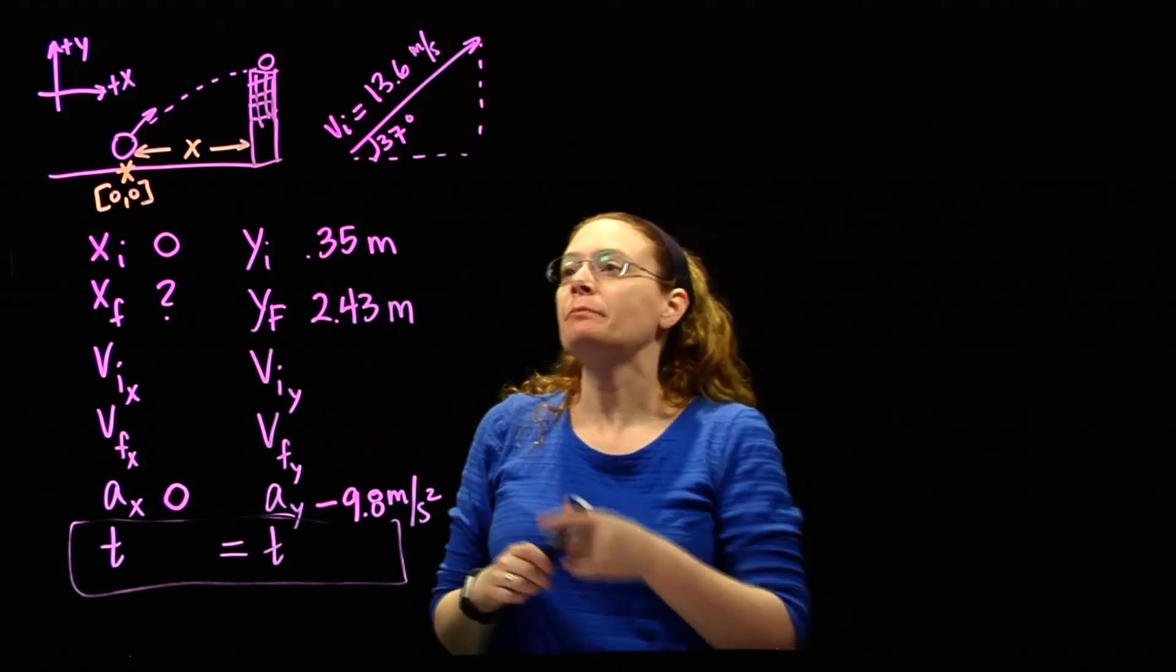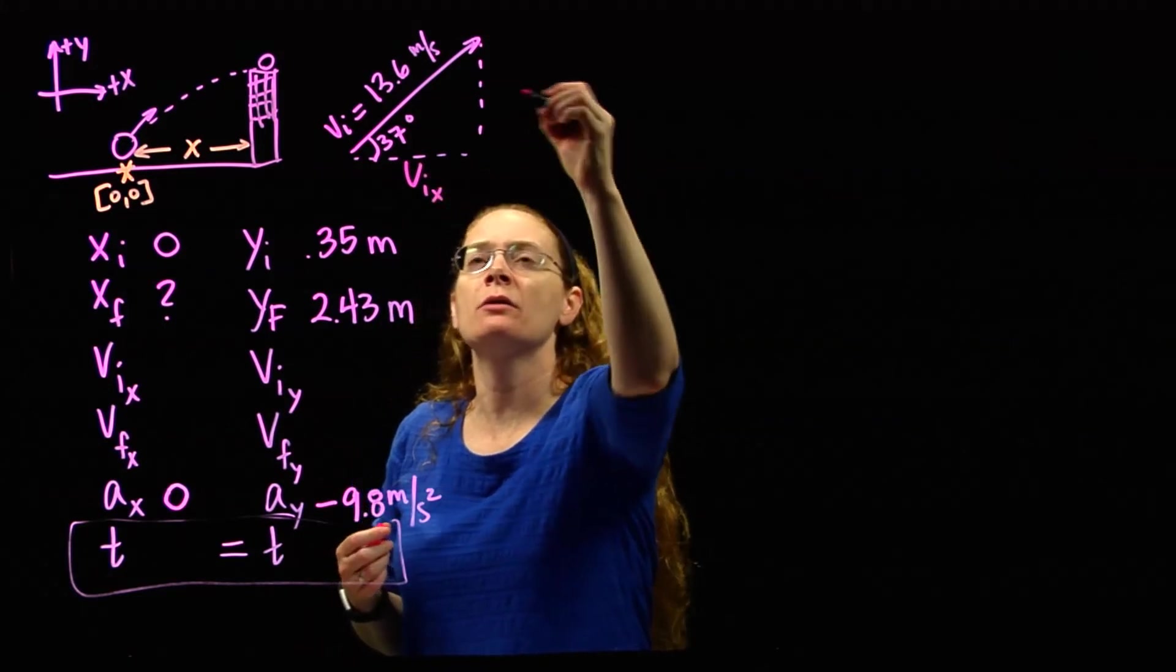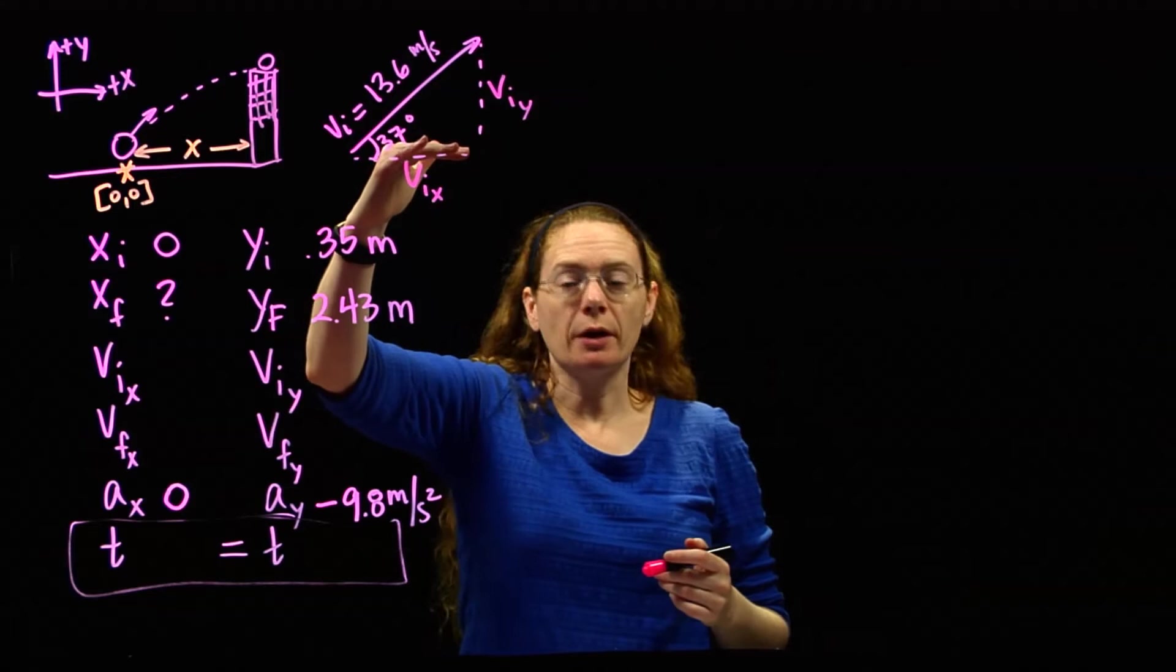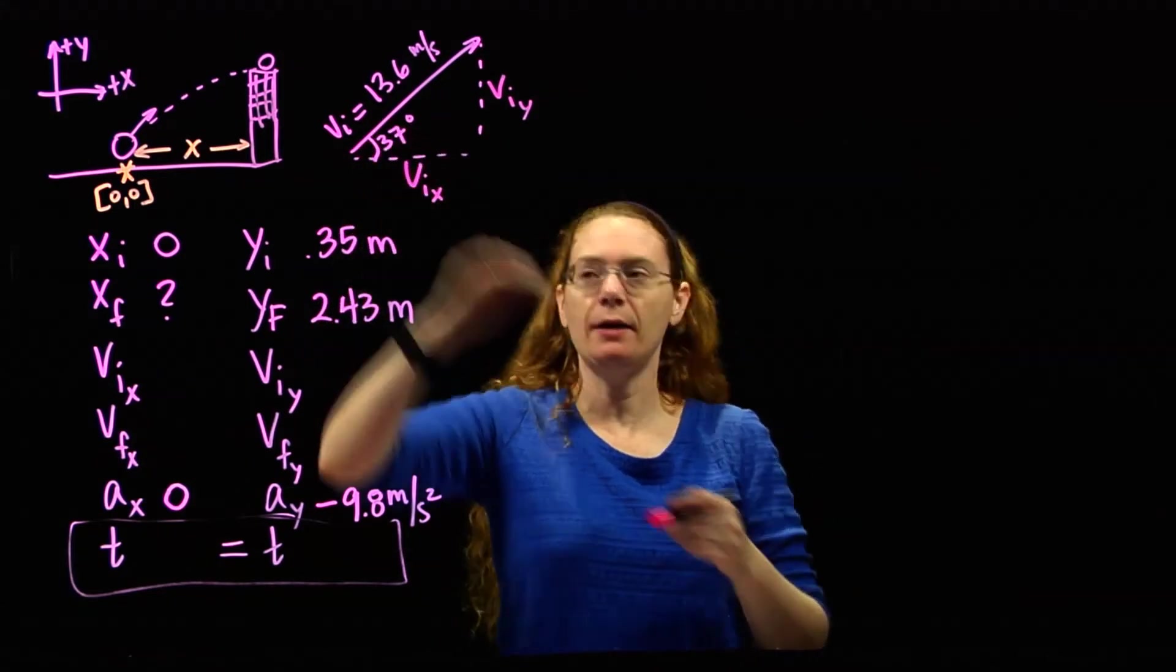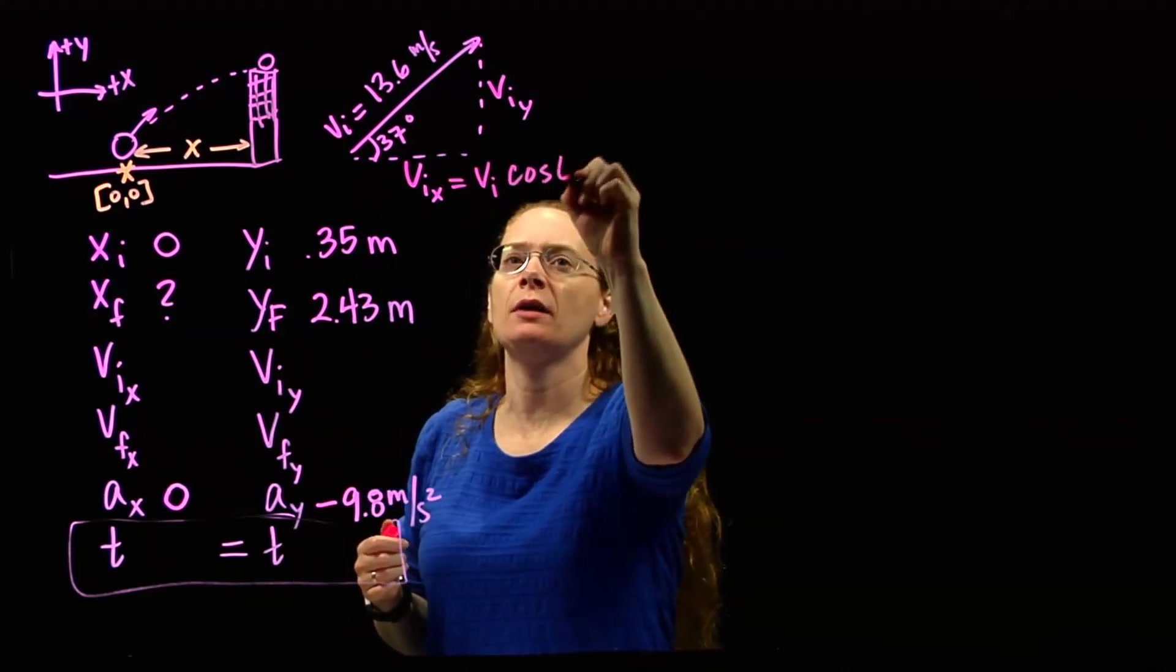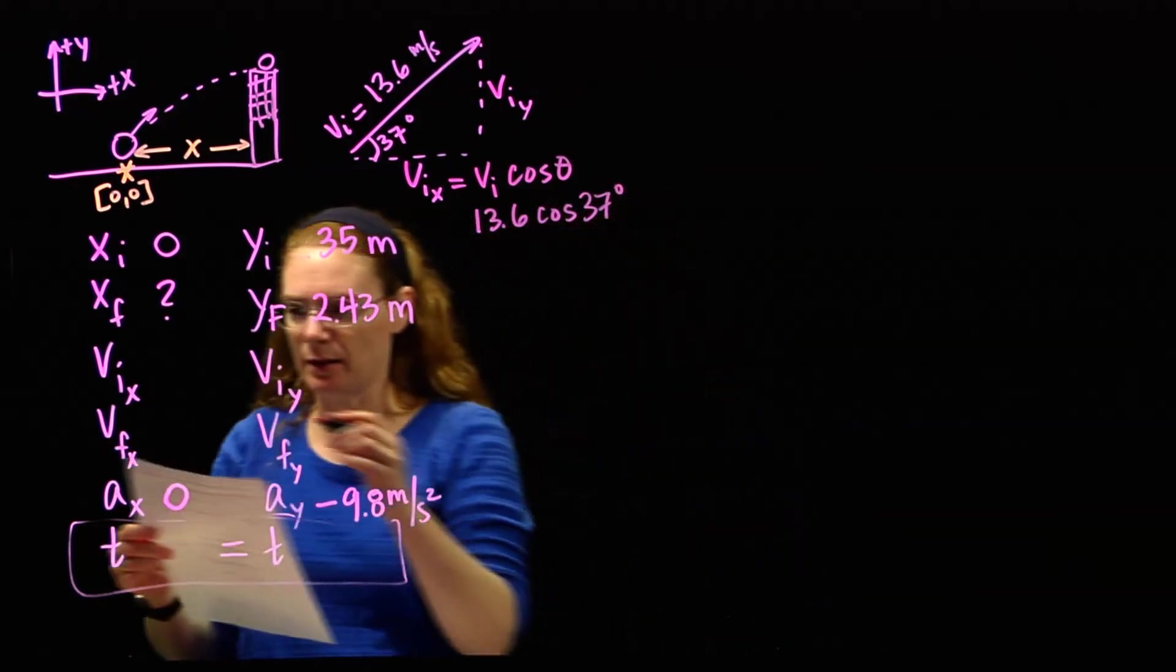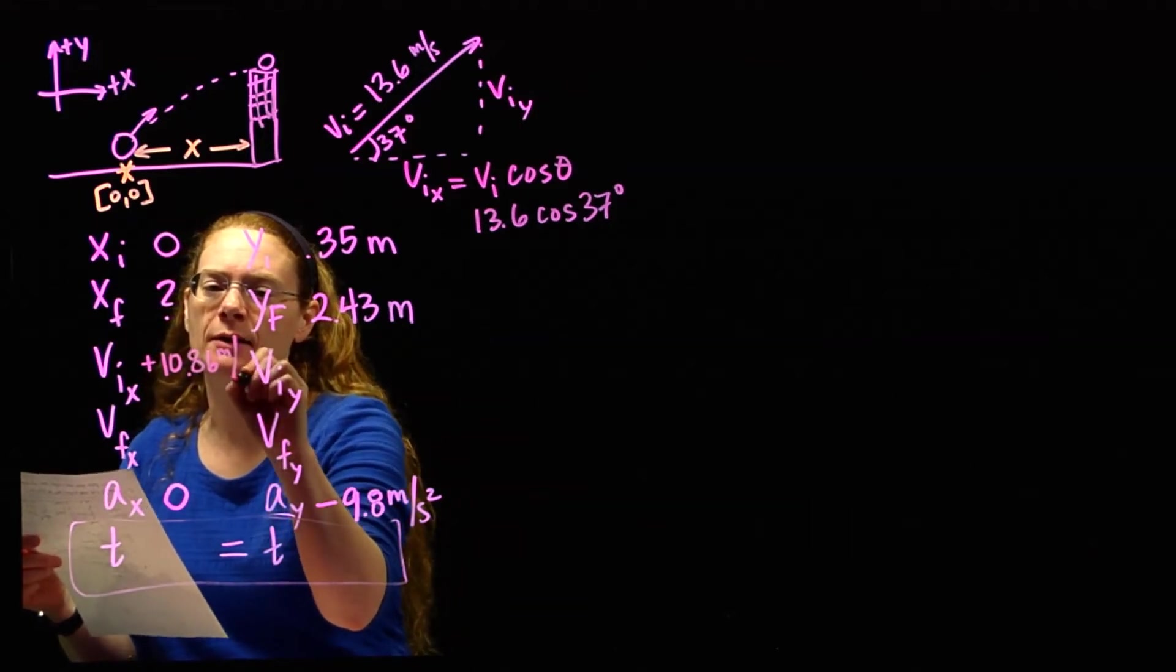Because we treat left, right, and up, down independently. They're separate. So I need to figure out what the left, right component of this velocity is. Here's where we use our trig. This is my vix, initial velocity in the horizontal direction. If I want to know what this side is, this is the adjacent side, so this is the cosine side. So vix is going to be the initial velocity times the cosine of the angle. That's 13.6 times the cosine of 37 degrees, which is 10.86 meters per second.